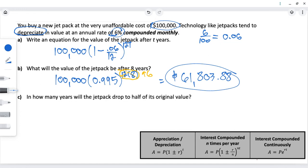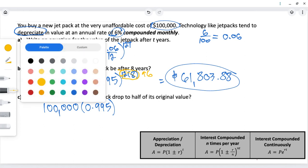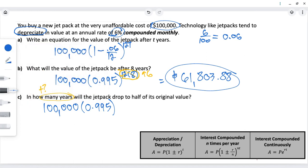For the third part here, in how many years will the jetpack drop to half of its original value? Let's set up our equation, just like before. Because it's asking how many years, that means we don't know what T is. That's going to be our variable that we're solving for. So, up in our exponent, we will write 12T. And we want to know when it's equal to half of what it started with. Well, half of 100,000 is 50,000.